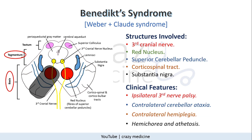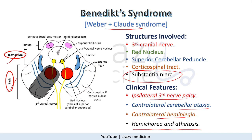Last is Benedict syndrome. It is said to be a combination of Weber's plus Claude's syndrome. So there will be involvement of both the tegmentum and base. Clinical features will be ipsilateral third nerve palsy with contralateral hemiplegia and contralateral cerebellar ataxia, with additional symptoms of hemichorea and athetosis because of involvement of the substantia nigra.